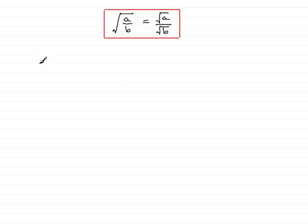So for instance, if we had, say, the square root of 36 over 4, according to what we have up here, this would be the same as the square root of 36 over the square root of 4.